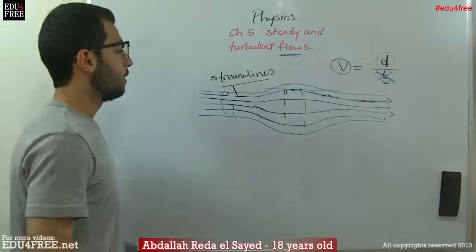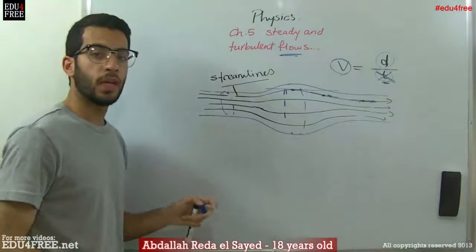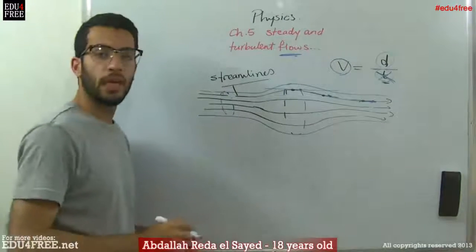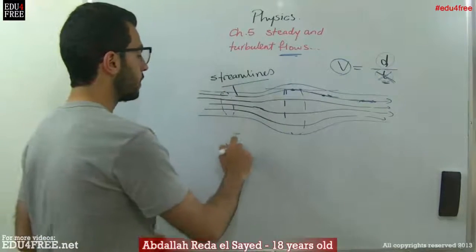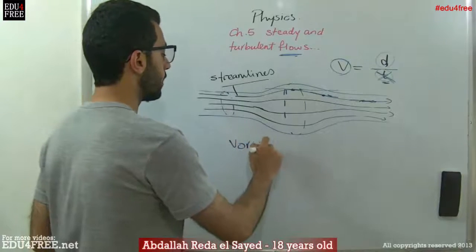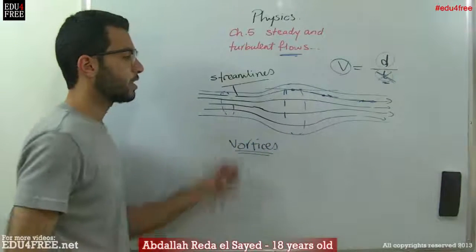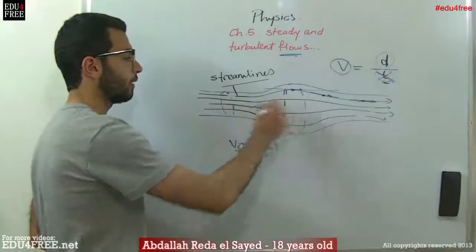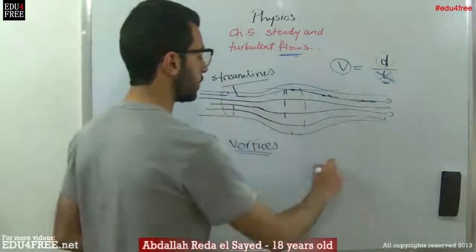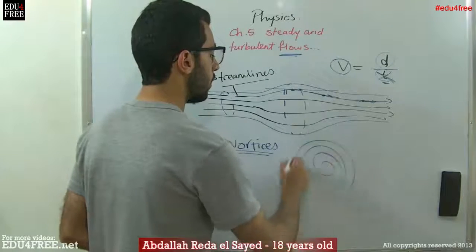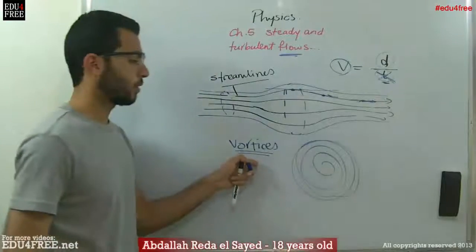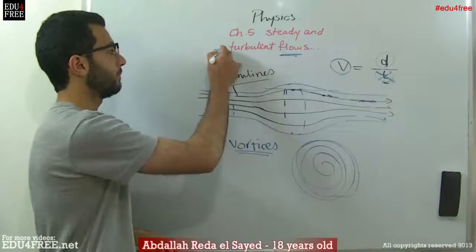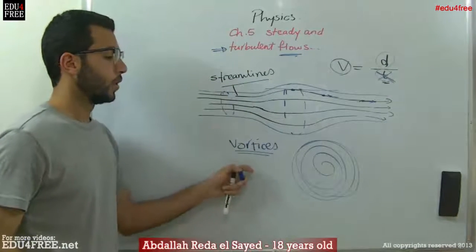Additionally, a steady flow is an irrotational flow. This means there are no rotations or vortices that occur inside the tube while the streamlines are moving. If the formation of vortices occurs, the flow turns into a turbulent flow — so no vortices are present in a steady flow.